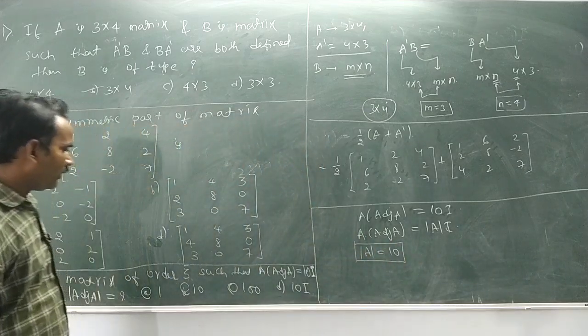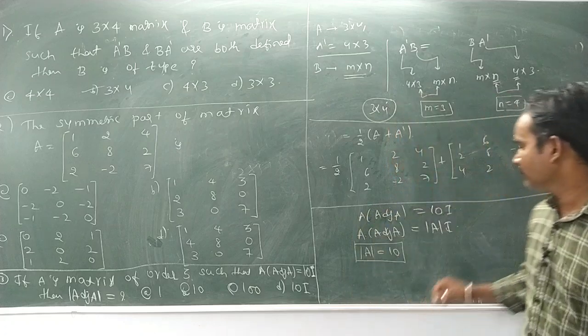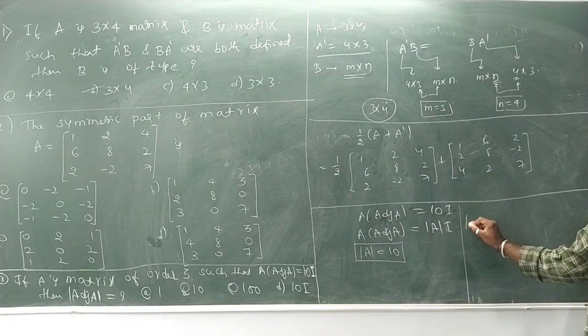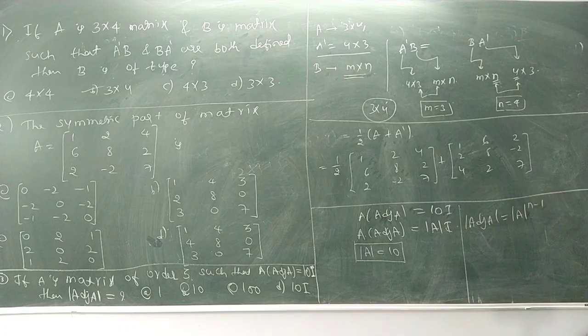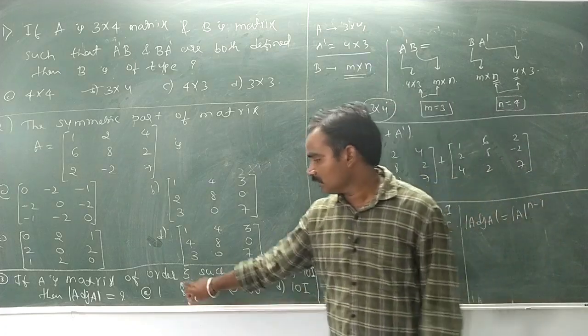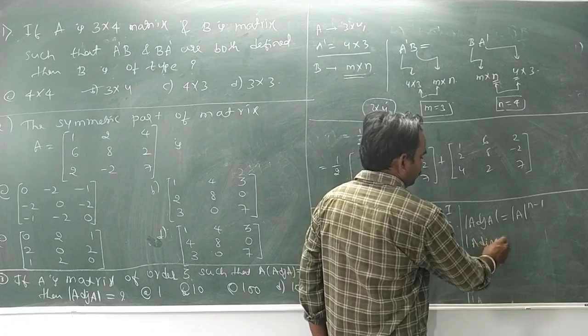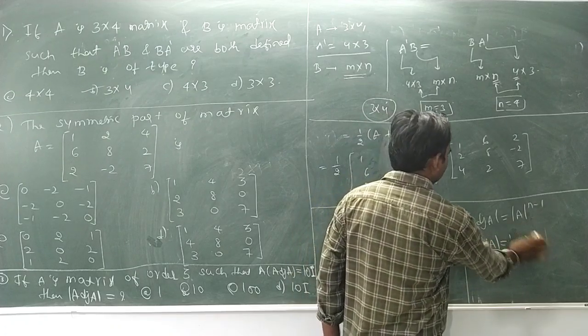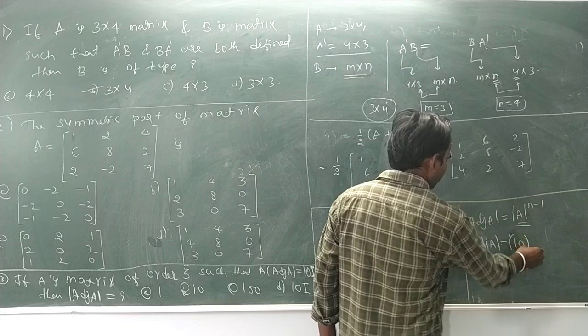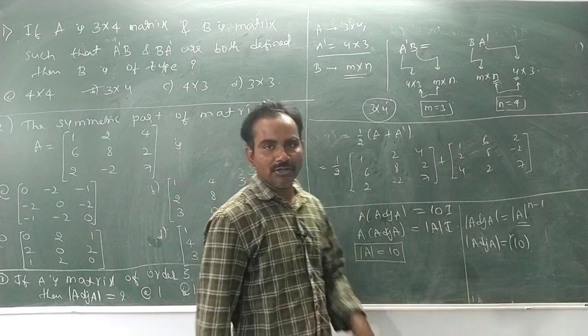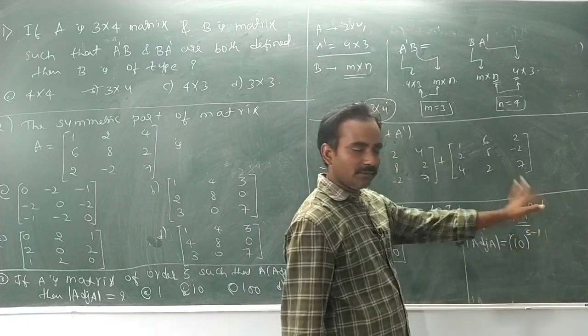What we need to find is determinant of adjunct of A. The formula is: determinant of adjunct of A equals (determinant of A) to the power (n minus 1), where n is the order. Order is 3 here. Substituting, determinant of A is 10, so 10 to the power (3 minus 1).